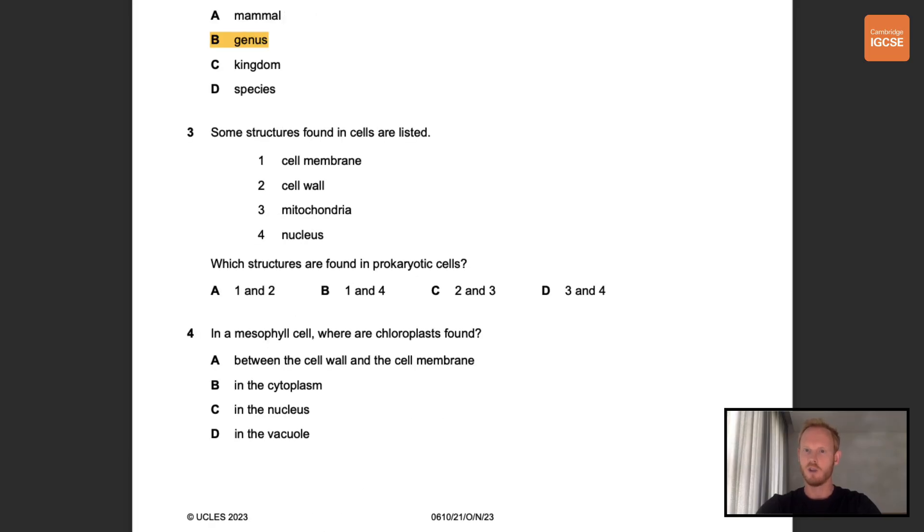Number three. Some structures found in cells are listed: cell membrane, cell wall, mitochondria, and nucleus. Which structures are found in prokaryotic cells? So prokaryotes like bacteria have a cell membrane and a cell wall but no internal membrane bound organelles. So no nucleus or mitochondria. The correct answer is therefore A.